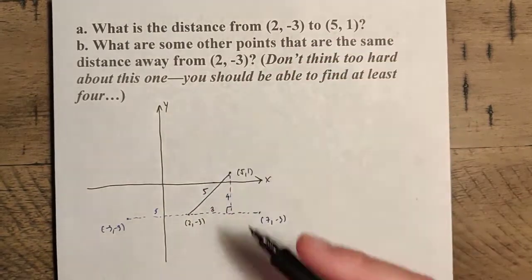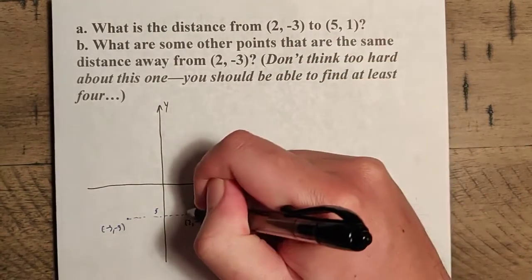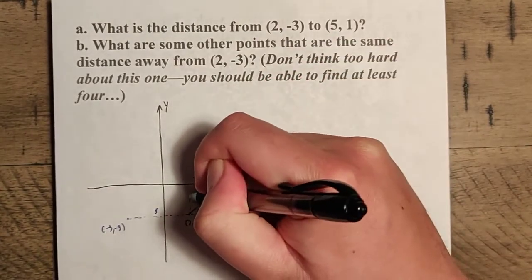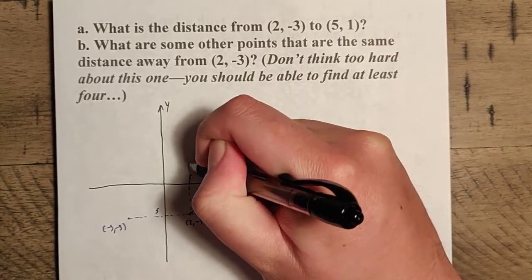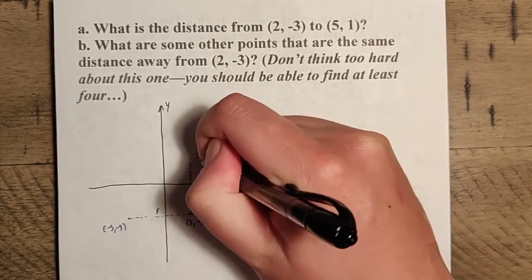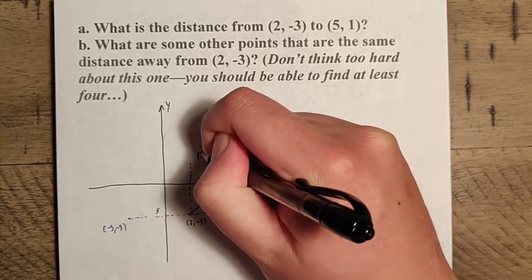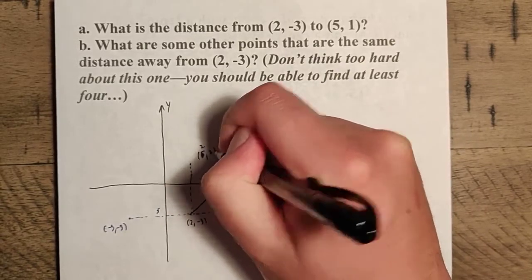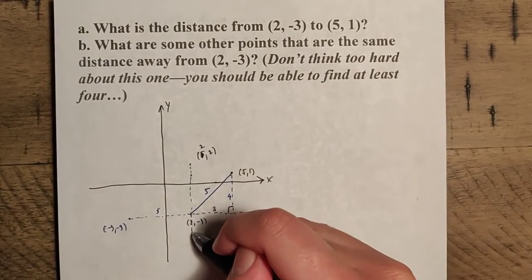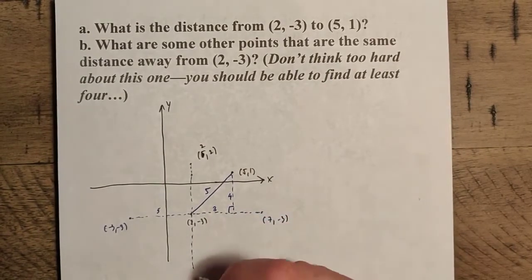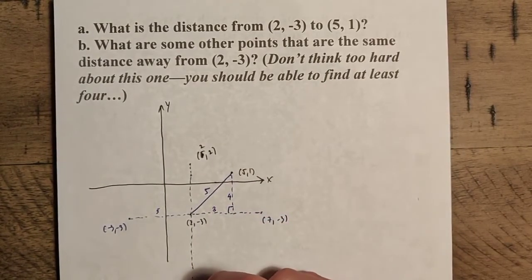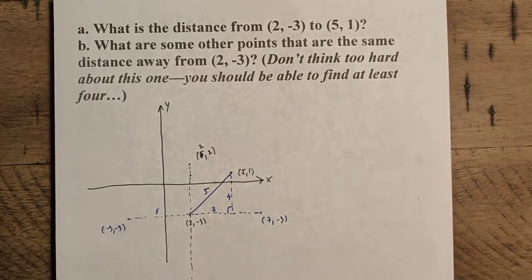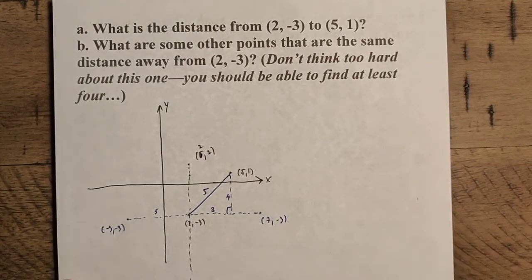In addition to going left and right, you can also go up and down. So we can go four up, we go four up to one and then we go up one more. So we're up here to the point two, two. And then do the same down here, go five downward and get to two negative eight. So we can come up with four points very easily here.